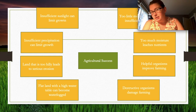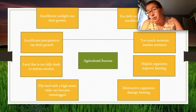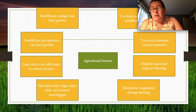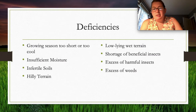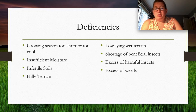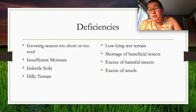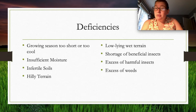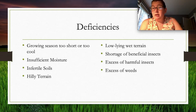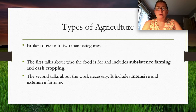Farming challenges include growing seasons that are too long or too short, insufficient moisture, infertile or hilly terrain, low-lying wet land, shortage of beneficial insects, excess of harmful pests, and excess of weeds. It's a lot of work — you can't just pick up and become a farmer. There's a lot you need to know and understand to be successful.